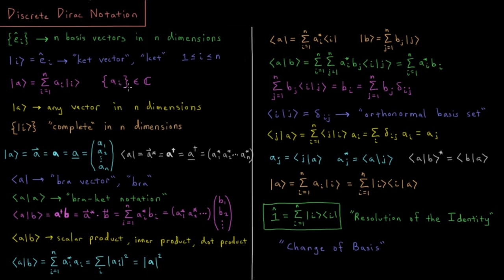These coefficients are in general complex numbers — more often than not just real numbers, but some scalar value. So this ket vector is just another way to represent vectors, adding to our list: a half arrow on top, a bold-faced letter, a single underline, or a column vector of descending coefficients.